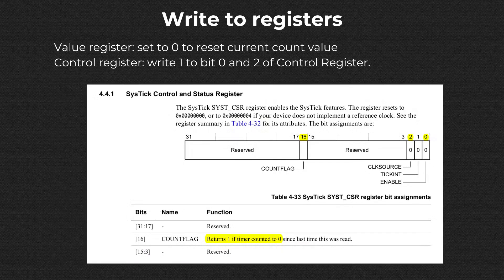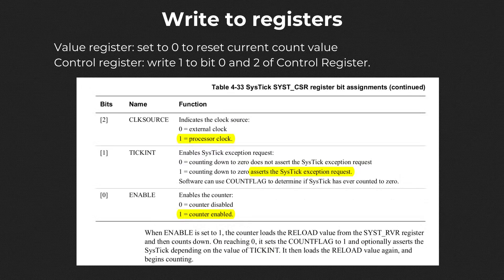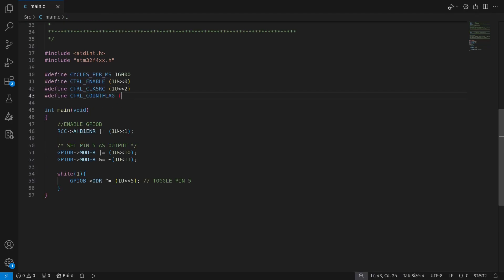Next, we clear the current count value by setting the value register to 0. We program the control register by setting bit 0 and bit 2 of the register to 1. Bit 0 will enable the counter, whereas bit 2 indicates that the clock source will be the processor clock. If bit 2 is 0, then we need an external clock source. Bit 16 is the count flag, which returns 1 if it finishes counting down to 0. Bit 1 is the interrupt bit and is not used here, but if it is set to 1, then finishing the countdown will generate an interrupt signal, otherwise not.